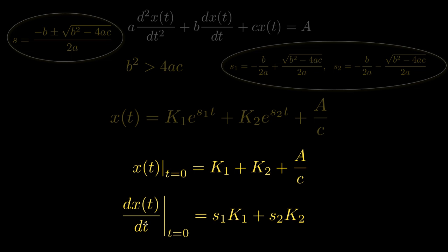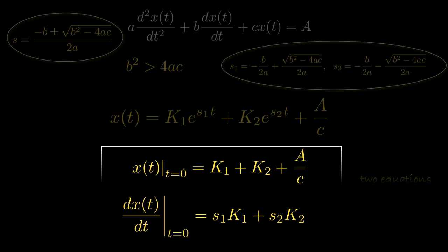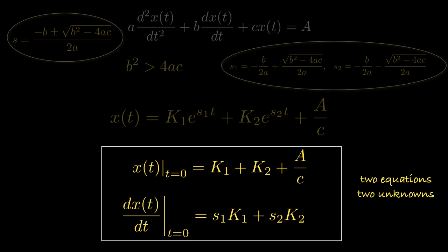The other condition is typically specified through the value for the derivative of x of t at the initial time. The derivative of x of t will be s1 k1 e to the s1t plus s2 k2 e to the s2t. If we let t be 0, the exponential terms will both be 1 and we'll be left with s1k1 plus s2k2. With these two initial conditions, we have two equations and two unknowns, and we can solve for k1 and k2. Once we know k1 and k2, we'll have a general expression for the solution to the differential equation.